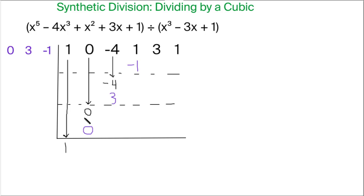And then we add. So 0 and 0 adds to 0, negative 4 and 3 adds to negative 1, and negative 1 and positive 1 add to 0.